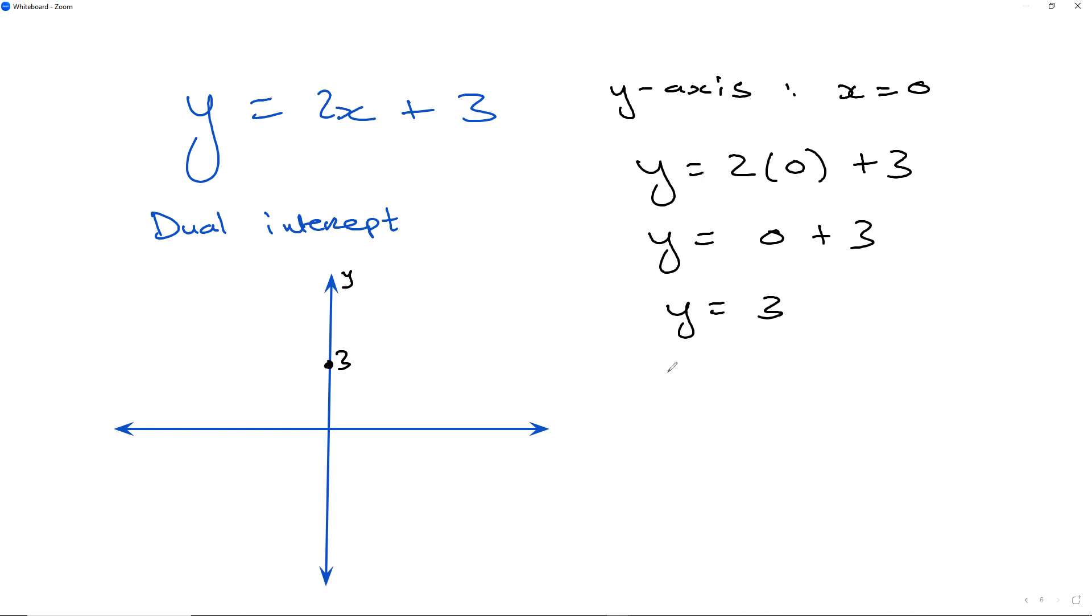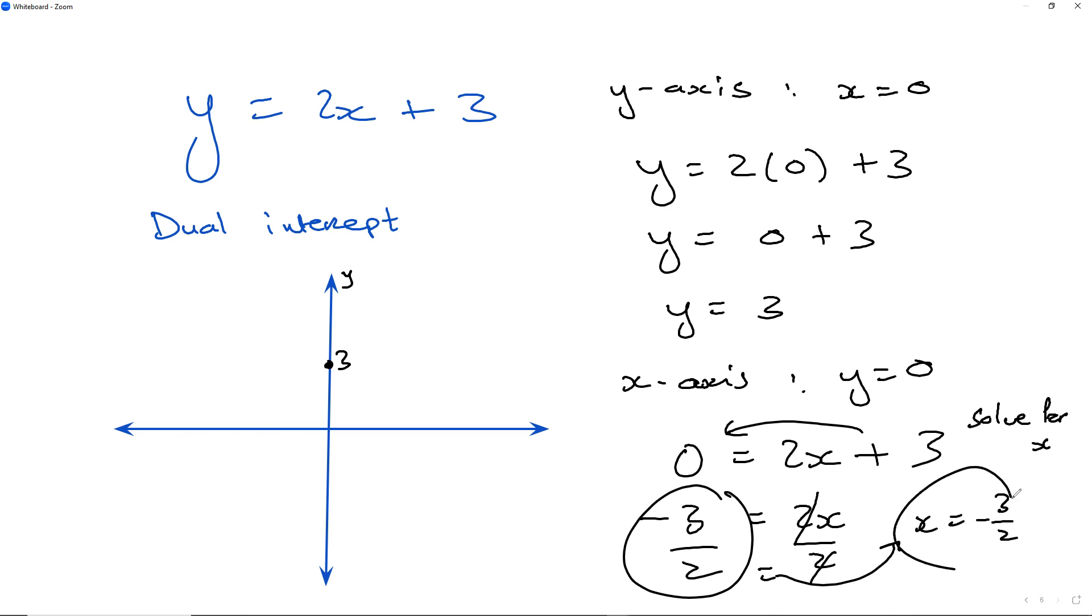Then you look at your x-axis in the same way, but now you make the y value in the equation equal to zero. So 0 equals 2x plus 3. You can see y is now zero, and then you solve for x after that. You solve for x by taking positive 3 over, becomes negative 3, and by dividing by 2 on both sides, my x value will become negative 3 over 2, so negative 1.5 or negative 3 over 2.